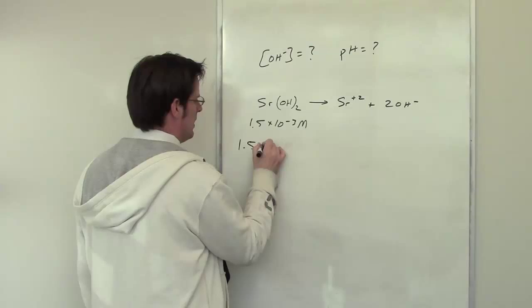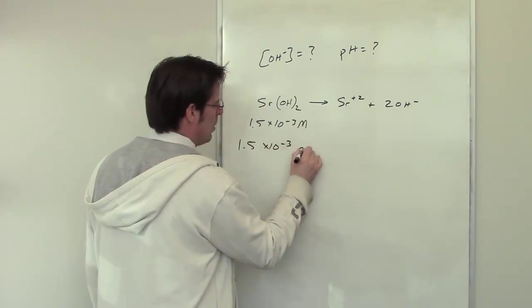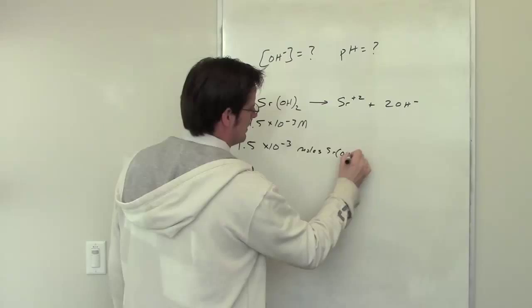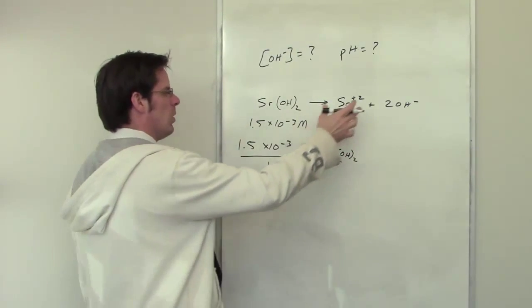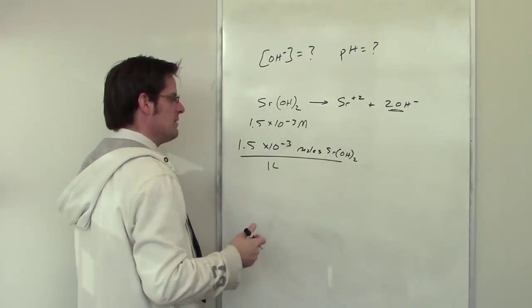If I have 1.5 × 10^-3 moles of strontium hydroxide in one liter, how many moles of hydroxide per liter is that going to end up giving me?